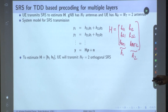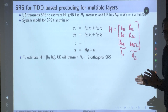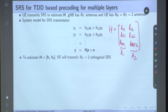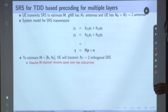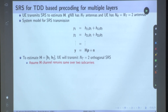To estimate this channel H, I am claiming that UE will have to transmit two orthogonal sounding reference signals. Why the number 2? Because UE has two transmit antennas. Two vectors X and Y are orthogonal when their inner product X-transpose Y equals 0. Now, we assume that channel H remains constant over two sub-carriers, which is easy to assume since two sub-carriers are only 30 kilohertz apart.